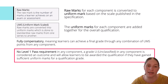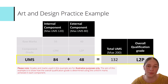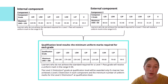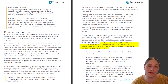Furthermore, there is no longer a Level 1 pass requirement in any component. A grade of unclassified, or U, in any component is considered an outcome and will allow learners to certificate as long as they have gained sufficient UMS points from all components for an overall qualification grade. Therefore, you should consider carefully whether a learner will benefit by retaking a component, as it may not be necessary to achieve the desired qualification grade. The total UMS required to achieve qualification grades are detailed in the specification. The Terminal Assessment Rule requires the externally assessed component to be taken at the end of the qualification. This means the internal component must be set either prior to or in the same series as the external assessment to fulfill the Terminal Rule.